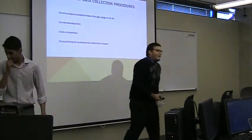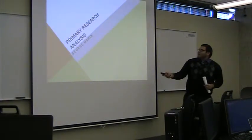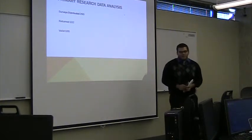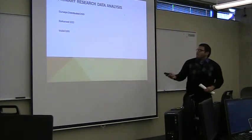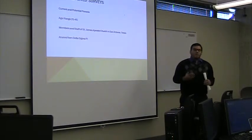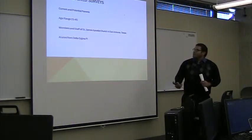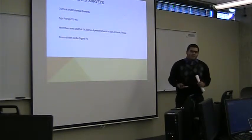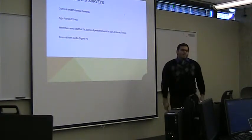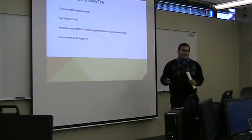All right, thank you. As Talal said, I am George, and I will be discussing the primary research data analysis. So what that includes is the number of distributed surveys, received surveys, and invalid surveys. So let's talk about who received the surveys first. For us, we thought for the best results, we would pick people that are between the age range of 25 to 45, and are current or potential parents. After we set this criteria, we decided to ask members and staff of the St. James Apostle Church in San Antonio, Texas, and alumni of Austin Prep to fill out the survey. We picked these two groups because we felt that they represented the criteria we set and the target market well.